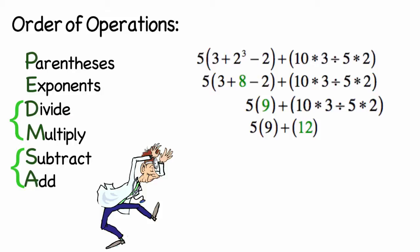So now I am left with 5 times 9 plus 12, or 45 plus 12, giving us a final answer of 57.